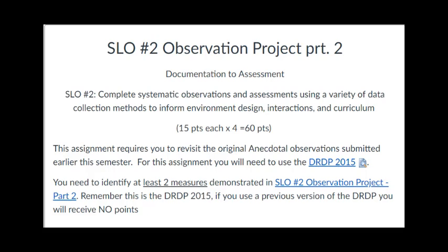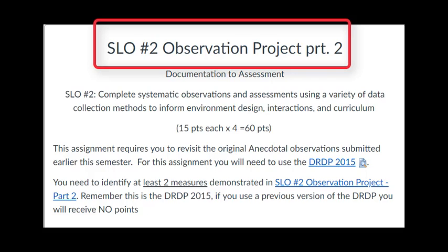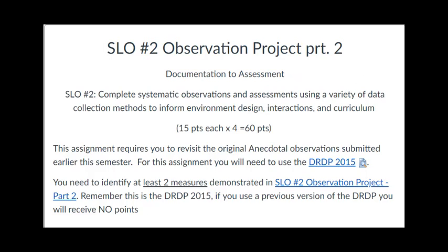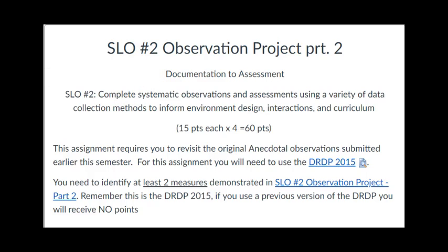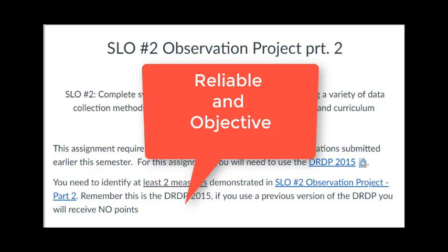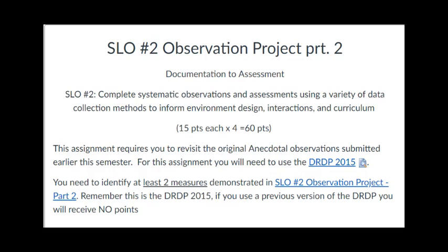This week we're going to start on part two of our observation project. We're going to take a look at the documentation we created in part one and then we're going to do some assessment based off that documentation. Remember, this is how we make our assessment valid — we use the observations, put them into reliable and objective documentation, and that's where we get assessment that is valid.